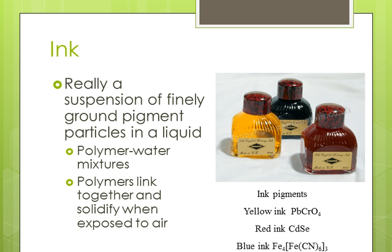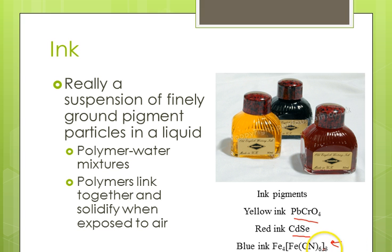Ink is actually a suspension. The particles for the pigments are finely ground solids put into a liquid. The liquid might be a polymer-water mixture, and then the polymers link together and solidify when exposed to air — the water will evaporate, leaving just the solid pigment behind. There are a lot of different pigments: yellow ink could be lead(II) chromate, red ink might be cadmium selenide, blue ink might be a compound with a complex ion in it. White inks might be TiO₂, which is also used for white paints. So they're really suspensions.